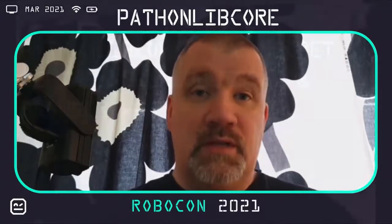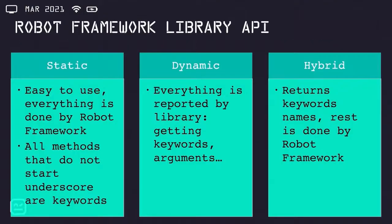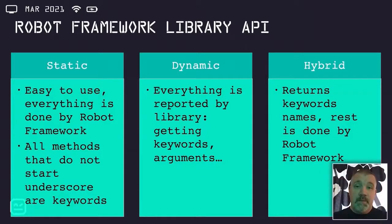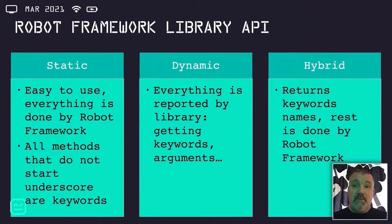But why is Python Lib Core actually cool? For that, you have to understand the Robot Framework Library API. Robot Framework Library API has three different kinds of APIs. There's the static, which is relatively easy to use and is very well fitted for small size libraries. All methods that do not start with underscore are keywords, and that's it. Robot Framework does everything else — running keywords, discovering keywords, discovering the arguments, documentation, and stuff like that.